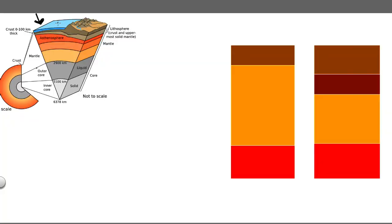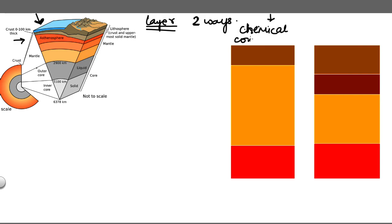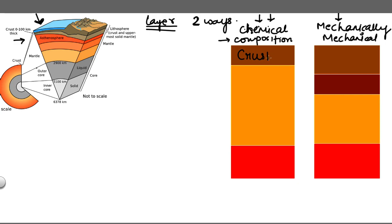The most common image you see when you start learning about the structure of earth shows the cross-section of layers. Instead of just understanding that diagram, we are going to start from scratch so we understand the structure of earth better. Layers have been classified in two ways: first, chemically — based on chemical properties or composition; and second, mechanically — based on mechanical properties.